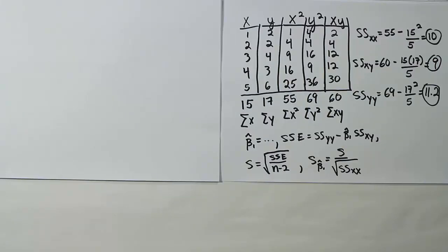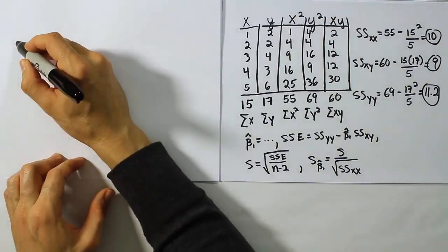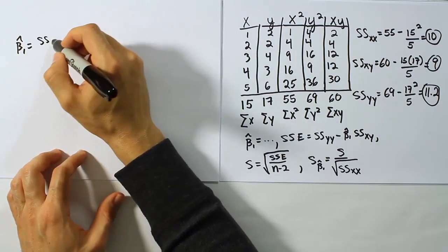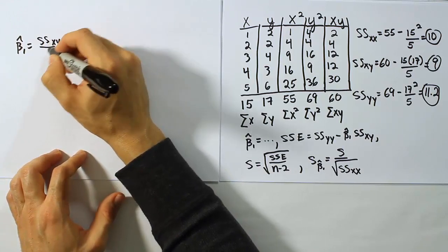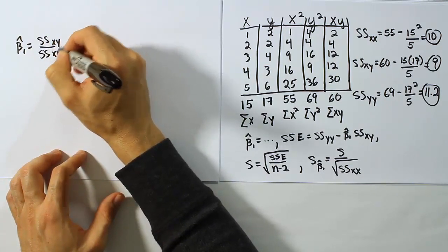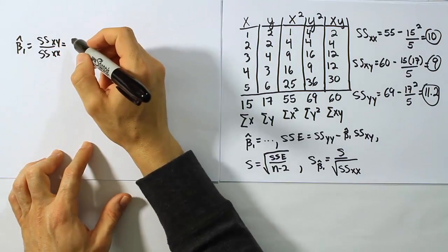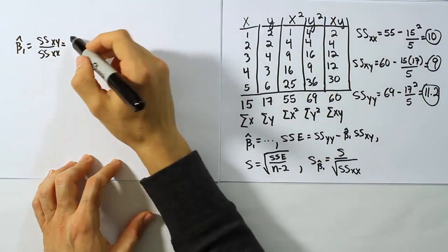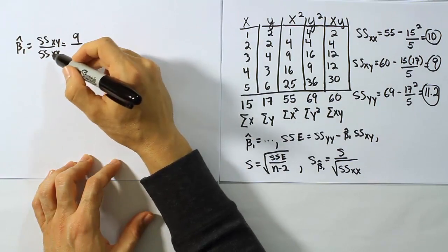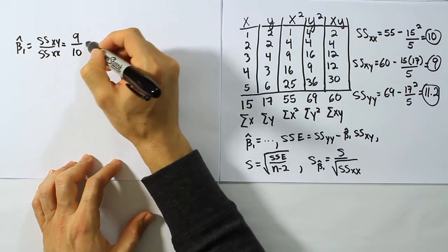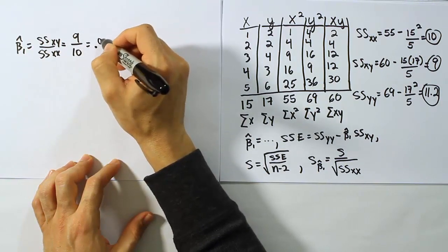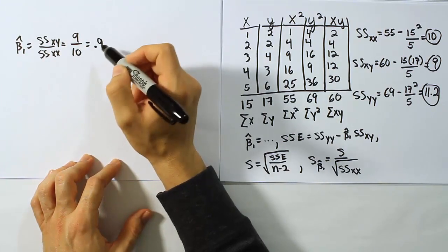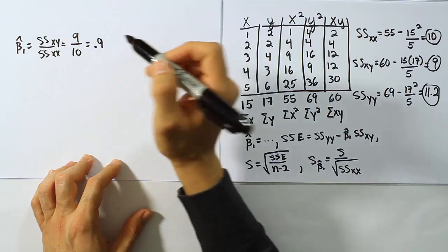So let's work on beta 1 first. To do beta 1 hat, we're going to do SSxy over SSxx. Now, in our case, we worked out SSxy to be 9, so it'll be 9 over SSxx, which is 10. So, that works out to be 0.9, or 9 tenths. So that's the answer for beta 1. Now, we're going to take beta 1 and enter it into SSE.